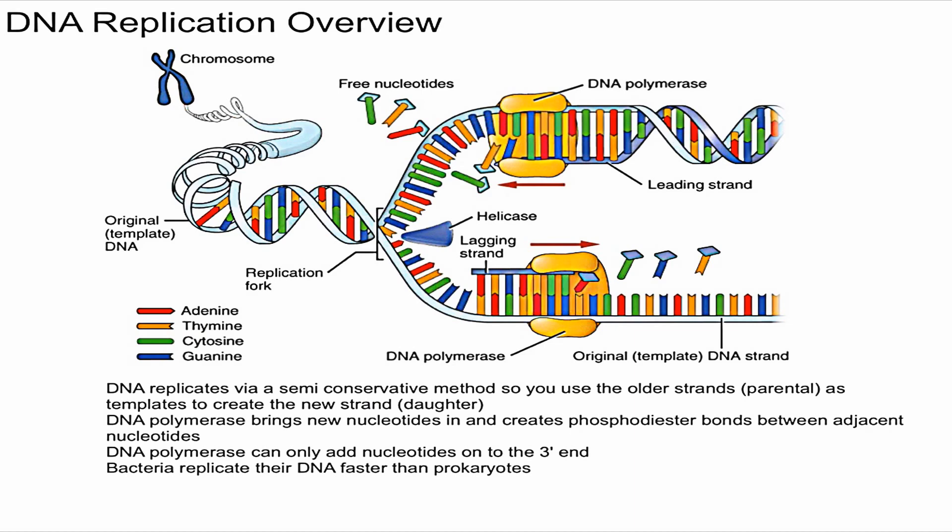That is essentially how DNA polymerase is able to copy and make another strand of DNA. DNA polymerase brings new nucleotides in and creates phosphodiester bonds between adjacent nucleotides. In future videos we'll get more in depth on this process.